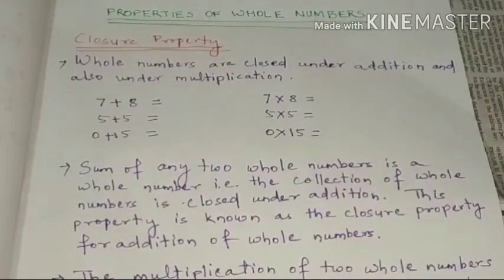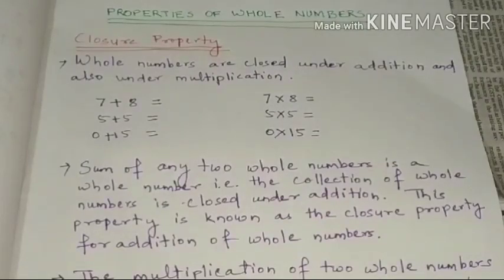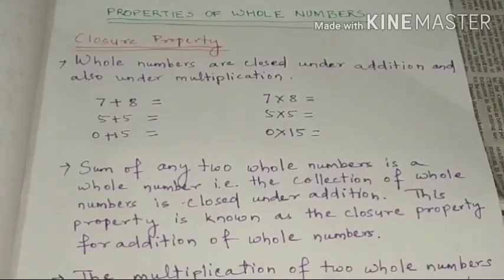So let's start. Before starting, we will see what we have studied in last class. In last class, we studied about whole numbers — what is a whole number — and we studied how to add, subtract and divide whole numbers with the help of a number line. Here we will study about properties of whole numbers.